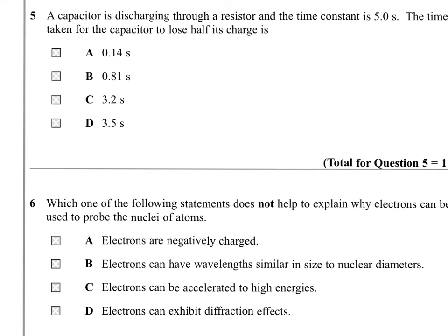Question 5. A capacitor is discharging through a resistor, and the time constant is five seconds. The time taken for the capacitor to lose half its charge is going to be one of these values.